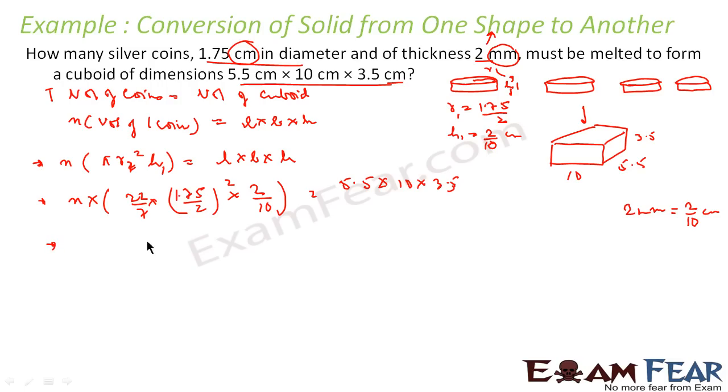So if you solve the volume and find the value of n, n will come out to be 400. You can solve this, n comes out to be 400. That means we need 400 coins, we need 400 such coins melted together to form a bigger cuboid of dimension 5.5 centimeter by 10 centimeter by 3.5 centimeter.